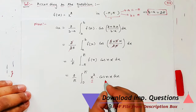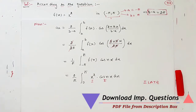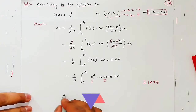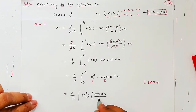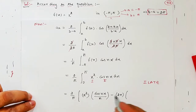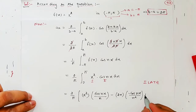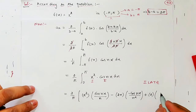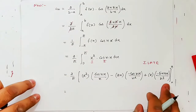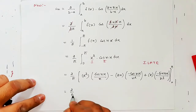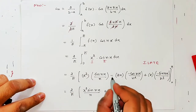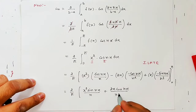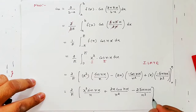Ab again do functions product mein aaye — ek first, ek second — aapko pata hai LIATE rule se. Toh 2/π as it is, first term as it is, second ka integration — cos ka integration kitna hota hai: sin(nx)/n. Minus first ka derivative — second ka integration sin ka integration hota hai minus cos(nx)/n². Fir plus sign — aur 2x ka derivative 2, aur minus cos ka plus sign aayega, toh minus pada rahega. Sin(nx)/n³. Limits 0 se π.